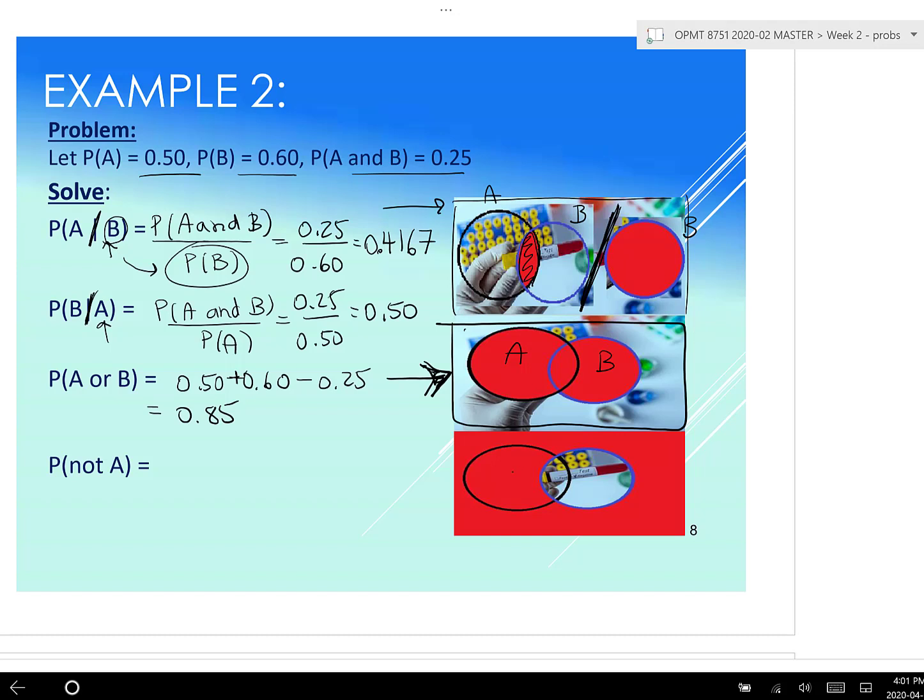And finally, not A. So if this, this were A. Oh, actually, let's do this. Forgive me. Let's talk about not B here again, just so that our picture matches up. Good. Okay. So not B. If this were B inside this circle, then not B would be everything else outside of B. So same as before, just do one minus the probability of B, and that becomes 0.60.